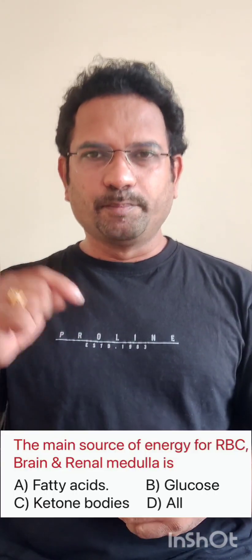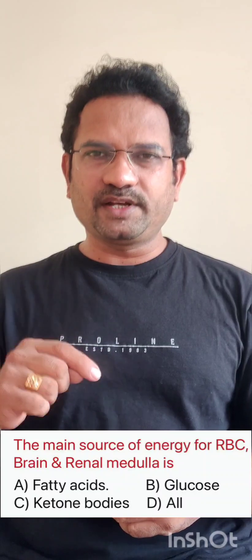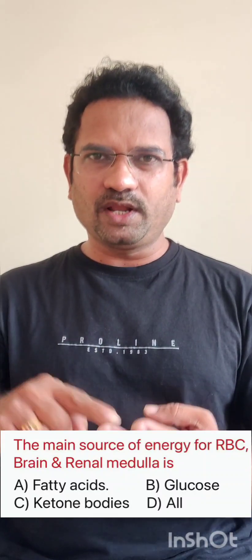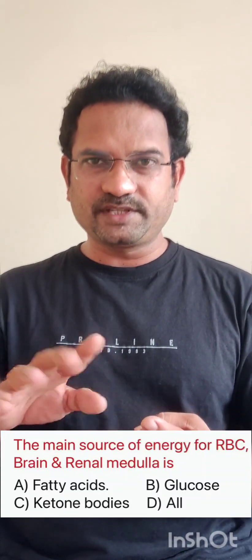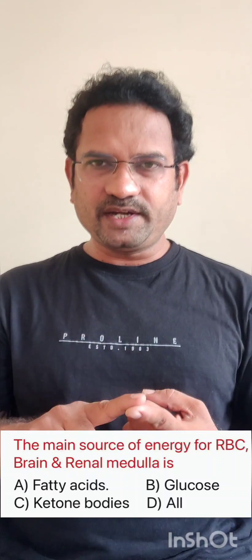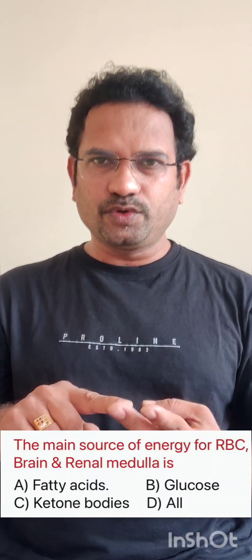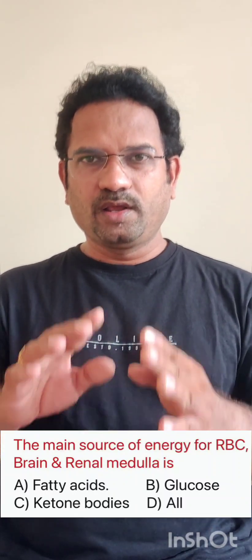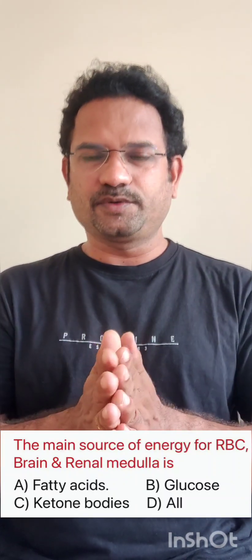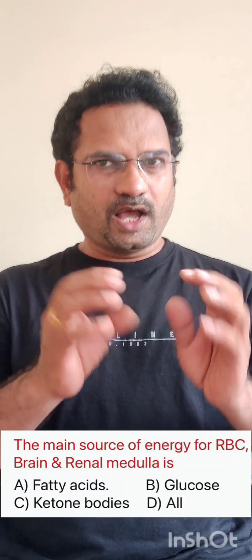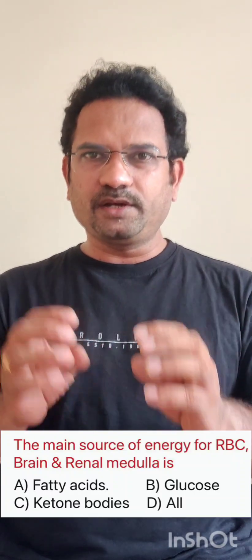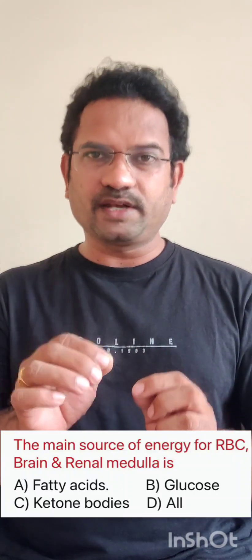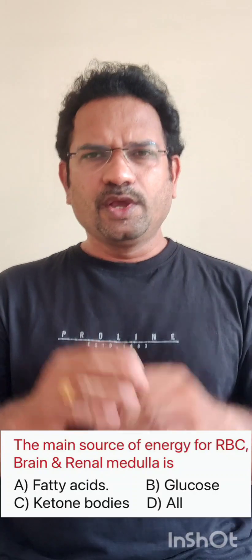The first question is: the main source of energy for brain, renal medulla, and RBC is? Options given are fatty acids, glucose, ketone bodies, or all. RBC, brain, and renal medulla — the main source of energy is glucose.